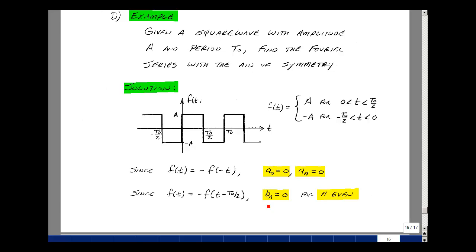And if you recall, that implies that B sub n is 0 for n even. So all we need to do now is find B sub n for n odd.